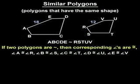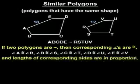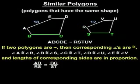Next, if two polygons are similar, then the lengths of the corresponding sides are in proportion. So in the diagram shown, AB is to RS, as BC is to ST, as CD is to TU, and so on.